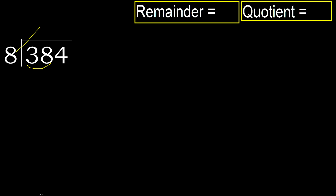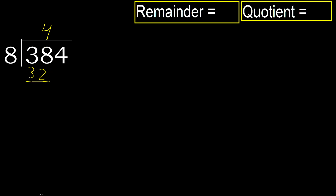8 multiplied by which number is nearest to 38 but not greater? 8 multiplied by 6 — 48 is greater. 8 multiplied by 5 — 40 is greater. Multiplied by 4 — 32 is not greater. Subtract: 38 minus 32 equals 6. Next.